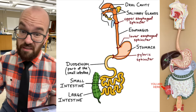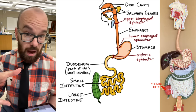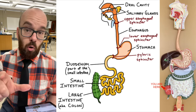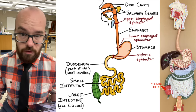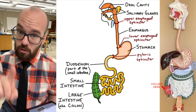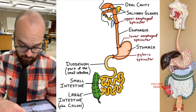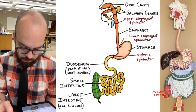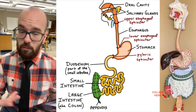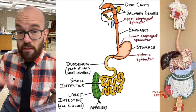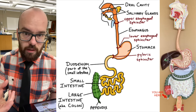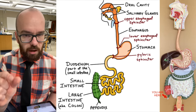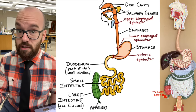The large intestine isn't called large because it's longer — it's actually shorter than the small intestine, but bigger around. It's larger, so we call it the large intestine. It also has another name: the colon. Anytime you hear colon or large intestine, they're the same thing — synonyms. You'll notice a little dangly thing hanging off the bottom of the large intestine called the appendix. For a long time we thought it was pointless, but we now think it acts as a reservoir for gut bacteria, so after diarrhea flushes out the large intestine, the appendix helps repopulate it with good bacteria.